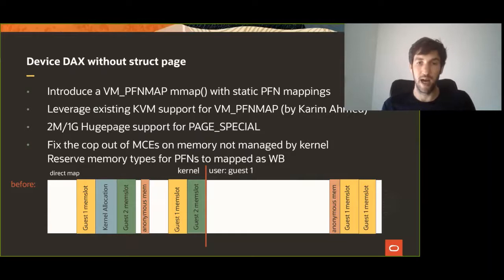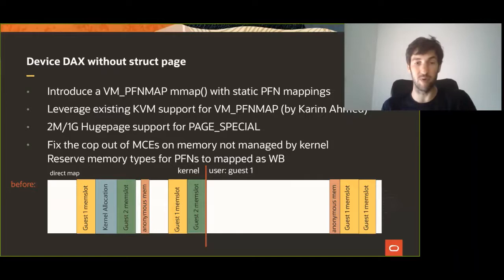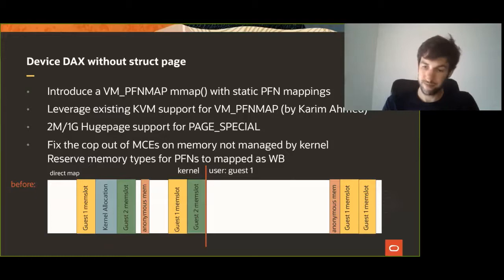But we had to support the PG_special flag. PG_special is how the kernel says this memory does not have a struct page. And finally, we had to fix memory failure, as the kernel bails out early when it has an MCE on memory it does not track. We had to reflect what the actual cache property is for RAM, to be able to map it as write-back as opposed to uncacheable. But that's nothing really different from what's done for /dev/mem, and there was no logic specific to DAX to make this work.